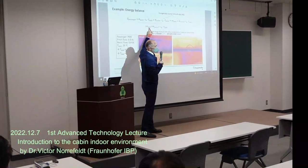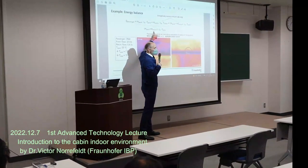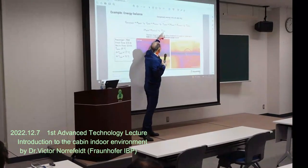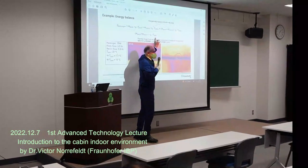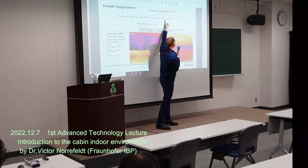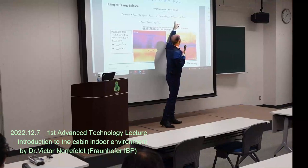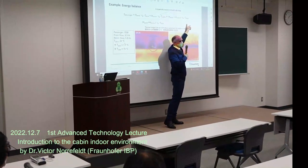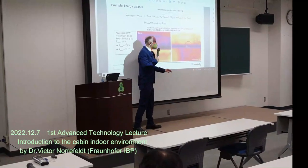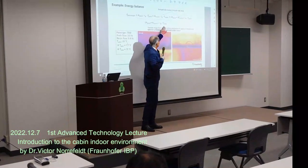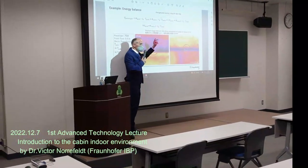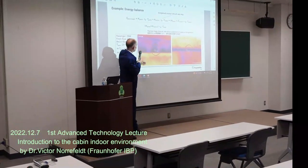What comes from the pack and what comes from recirculation, multiplied by CP and T inlet. What you extract from the cabin is the total air flow rate — so what comes from the pack and from the recirculation — multiplied with the cabin temperature. It's an energy balance: you supply inlet temperature, you exhaust cabin air temperature, and the difference between these two is used to cool the passengers.